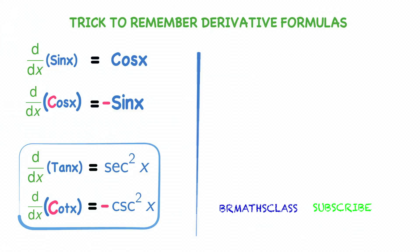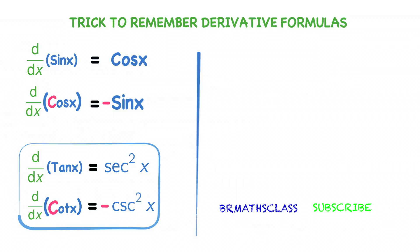Observe here: derivative of cot x — cot starts with C, so its derivative starts with minus. Derivative of any trigonometric function which starts with C has a derivative that starts with minus. Derivative of cot x equal to minus cosecant square x. I repeat: derivatives of only two trigonometric functions have squares — derivative of tan x is secant square x, and derivative of cot x is minus cosecant square x. It is an easy technique.